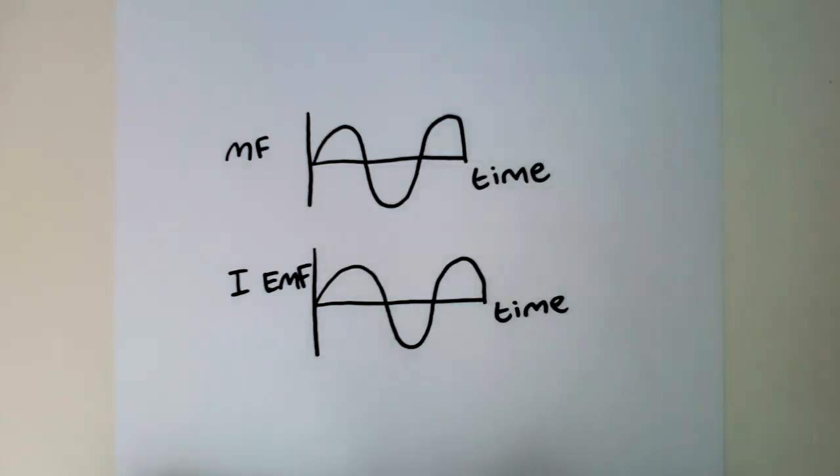So, the magnetic field must be changing to induce an EMF. When the gradient of the graph is zero, for instance, at the top of the peaks and the bottom of the troughs, the magnetic field is not changing. So, no EMF is induced. The magnetic field is changing most rapidly at the steep bits of the graph when it crosses the x axis. These produce maximum values of EMF. So, the magnetic field and induced EMF are 90 degrees out of phase.